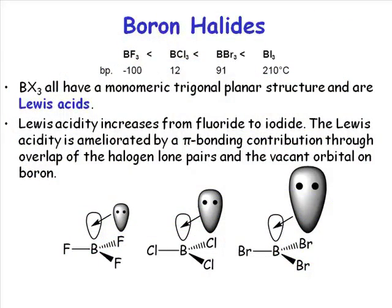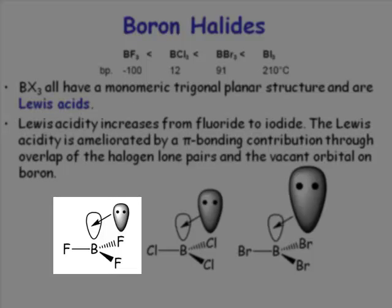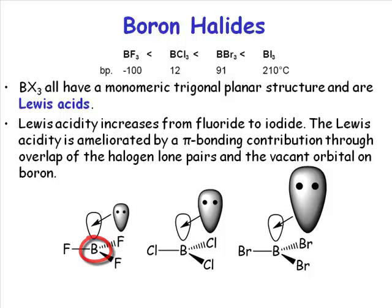In order to explain the trend in Lewis acidities, we have to look a little bit beyond our simple VSEPR trigonal planar model of the molecules. Here is boron trifluoride — it is trigonal planar, with an SP2 hybridised boron atom. Because it has an SP2 hybridised boron atom, we know that we're going to have a P orbital above and below that trigonal plane. So you have a vacant P orbital, which is what's responsible for the Lewis acidity of these boron halides.